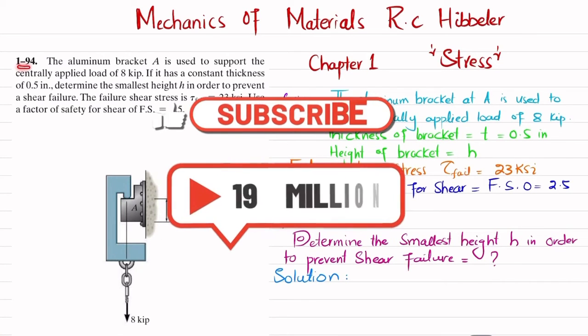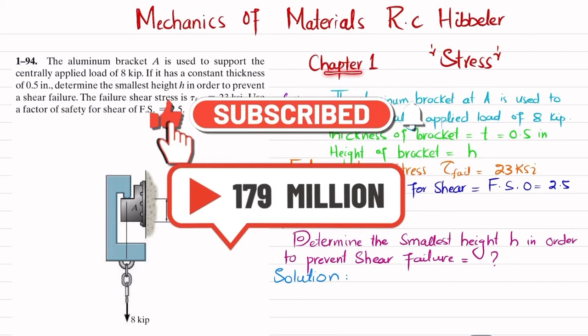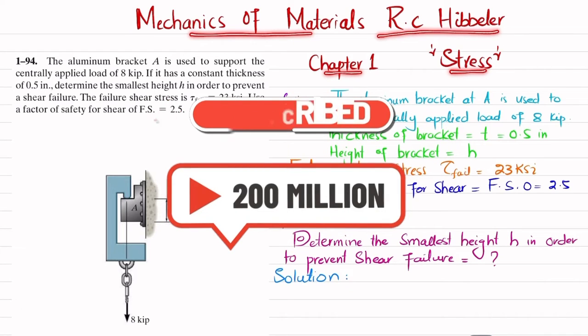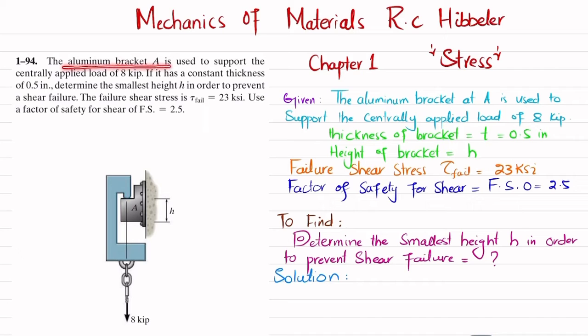Welcome back. Problem 1-94, this problem is taken from chapter number one, that is stress, and book name is Mechanics of Material by R.C. Hibbeler. The aluminum bracket A is used to support the centrally applied load.